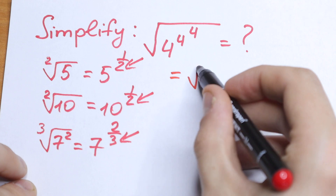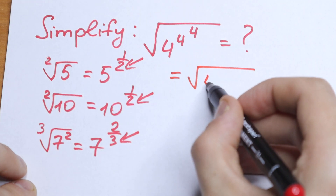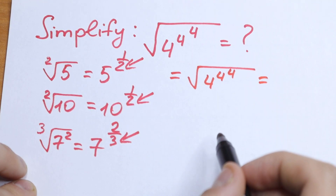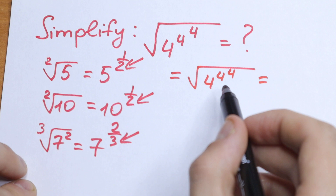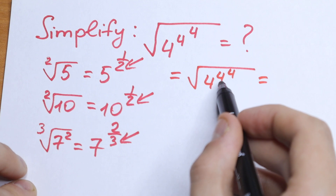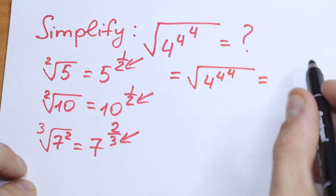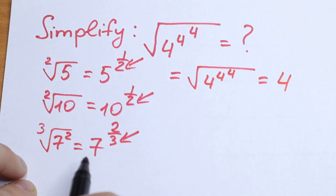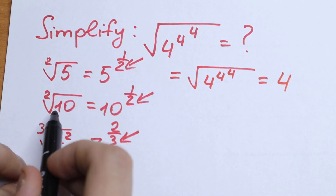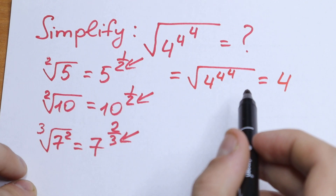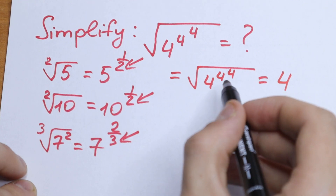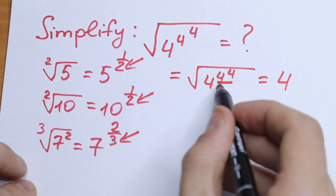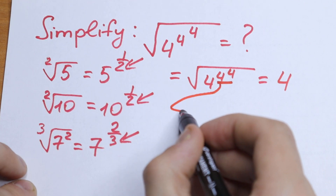We have the square root of 4 to the power 4 to the power 4, and we need to find it. First of all, we need to find our power. Right here we have the same base number inside, so what about the power? We need to divide this 4 to the 4th power by 2.